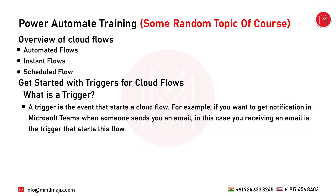We'll go over an overview of cloud flows. There are three types: automated flows, instant flows, and scheduled flows. Automated flows run when an item is created or modified in, say, a SharePoint list — triggering a task like sending an email. Instant flows require a trigger, such as a message on MS Teams or an email in Outlook, and work instantly based on actions defined in the workflow.